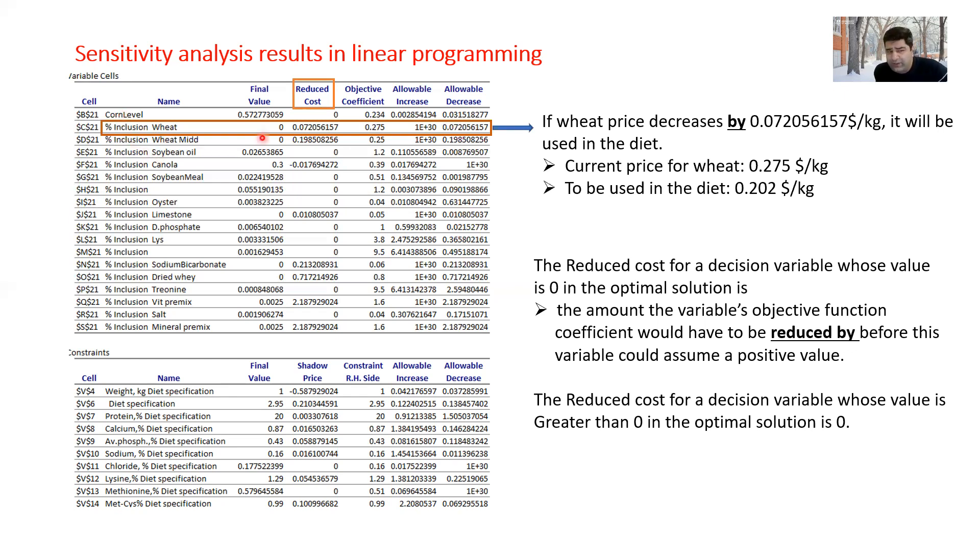What was the inclusion rate of wheat in my diet? 0 percent. It means that it was not used in my diet. Why? Maybe it was expensive. How much was it? 0.275 dollar per kilogram.